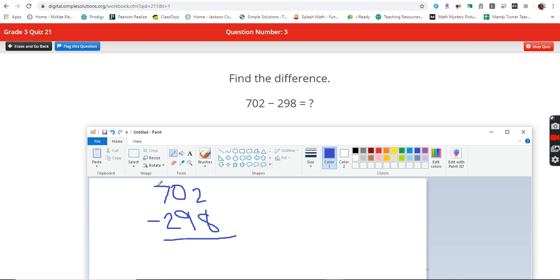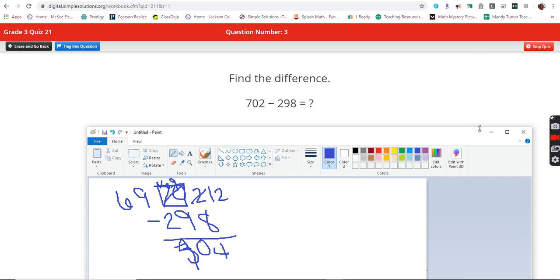You cannot take eight from two, but I cannot borrow from zero. So I'm going to come next door and box out that 70, make it 69, make this a 12. 12 minus eight is four. This should be a nine now. Nine minus nine is zero. And then the six goes up here. Six minus two is three. Oh, my goodness, is four. Oh, see? It's Wednesday, right? 404.